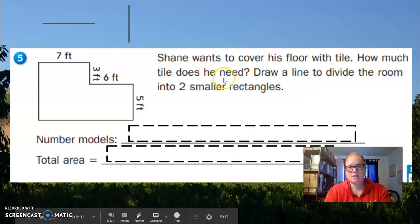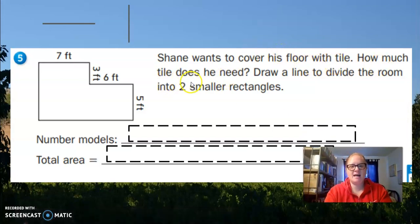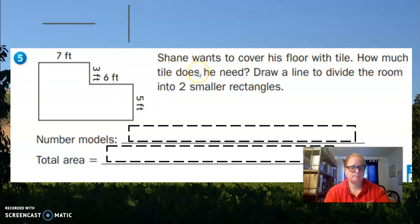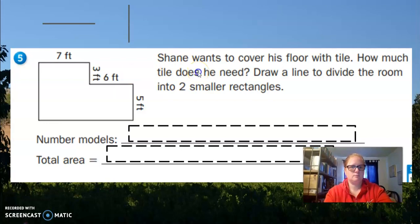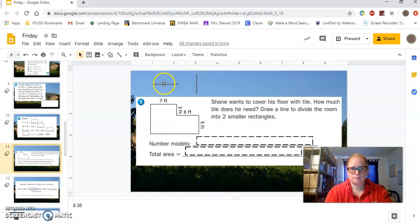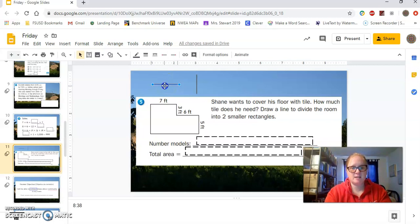So, this one, Shane wants to cover his floor with tile. How much tile does he need? Draw a line to divide the room into two smaller rectangles. Now, up here at the top, I provided you with two different lines because you could put this line right here and have that square or you could put this line here and have these two different rectangles. I'll show you what that would look like.